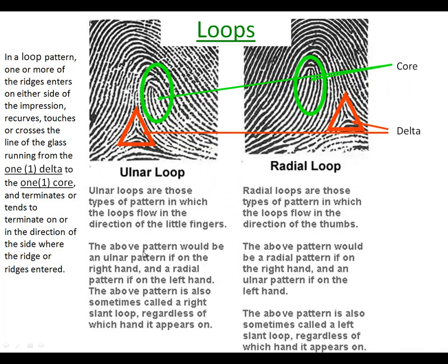So going with that as well, you're going to notice ulnar and radial loops. Remember we talked about radial loops being less common, and the way you determine which one it is: first, you need to know the suspect, and you have to identify which hand it came from, because a radial loop is always going to point towards the thumb, and an ulnar loop is going to point towards the little finger.